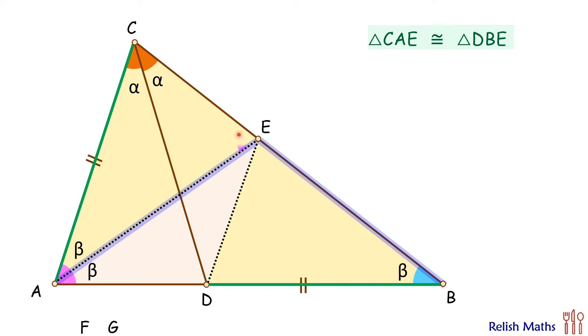Now, how about this angle E? If you look at triangle AEB, angle E here is an exterior angle which equals the sum of interior opposite angles. So this angle E will be 2 beta.